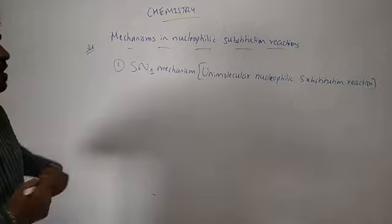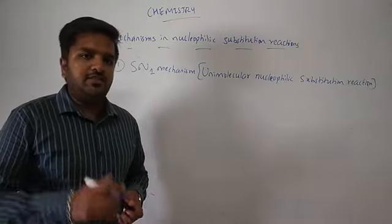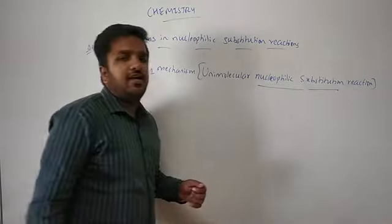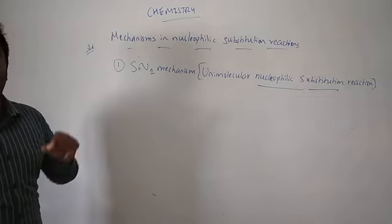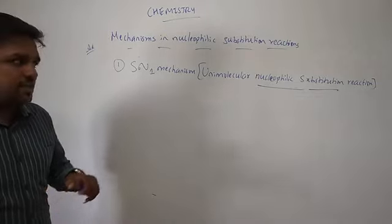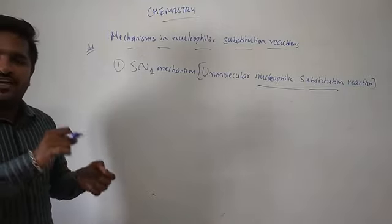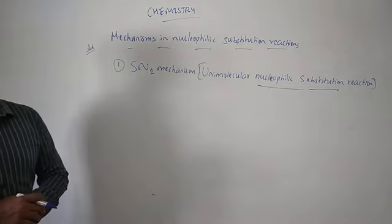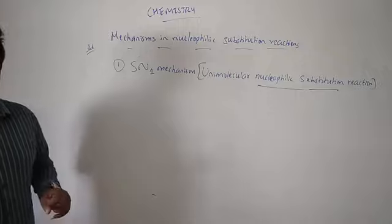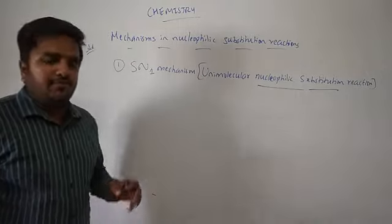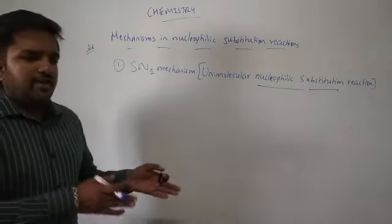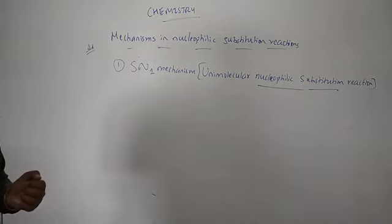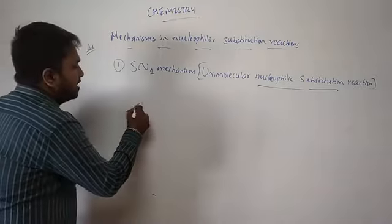SN1 mechanism stands for the unimolecular nucleophilic substitution reaction. We are understanding the mechanism involved — that is, how the nucleophile can substitute the halogen which is present in the haloalkane. There are two types: SN1 and SN2, and SN1 is completely different from SN2. Let us understand SN1 by taking an example.